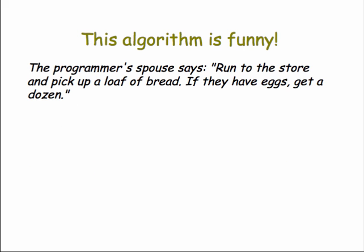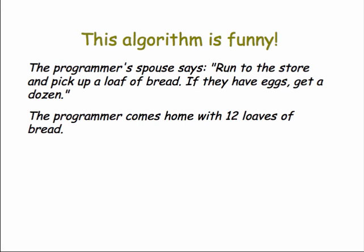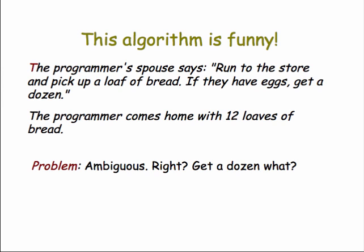Here's a funny example. The programmer's spouse says, run to the store and pick up a loaf of bread. If they have eggs, get a dozen. And the result of this algorithm is, the programmer comes home with twelve loaves of bread. So, the problem here is, it's ambiguous, right? Get a dozen what? The algorithm doesn't say.